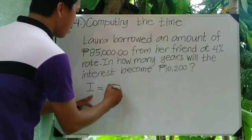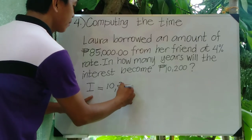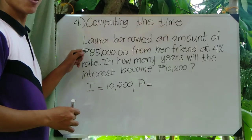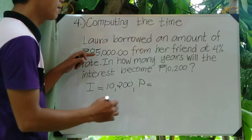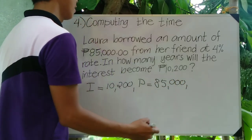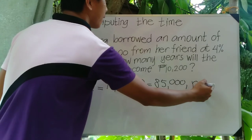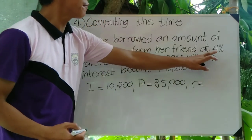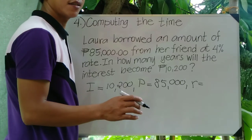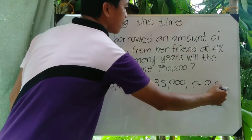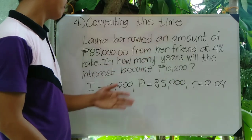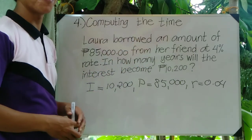The given in the problem: the interest is 10,200; the principal amount is 85,000 pesos; the rate R is 4%, which in decimal form is 0.04. For the time, we let x represent it since that is what we are solving for.